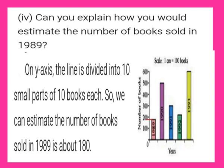Subdivision D: can you explain how you would estimate the number of books sold in 1989? On the y-axis the scale is 100, 200, 300, 400, 500, 600. Each line on the y-axis is divided into 10 small parts of 10 books each. On this basis, the number of books sold in 1989 is estimated as about 180, since the bar is below 200.